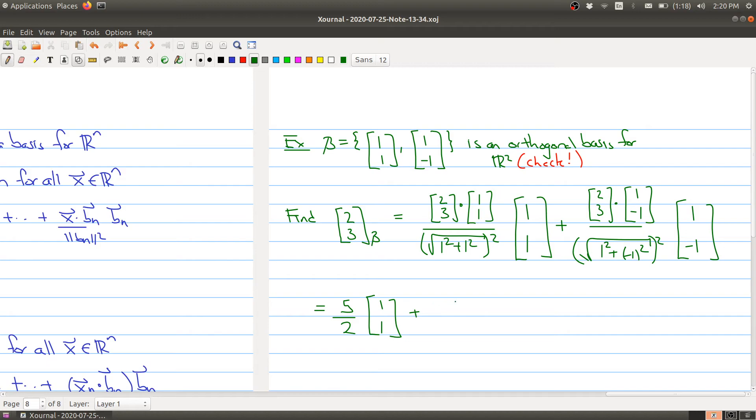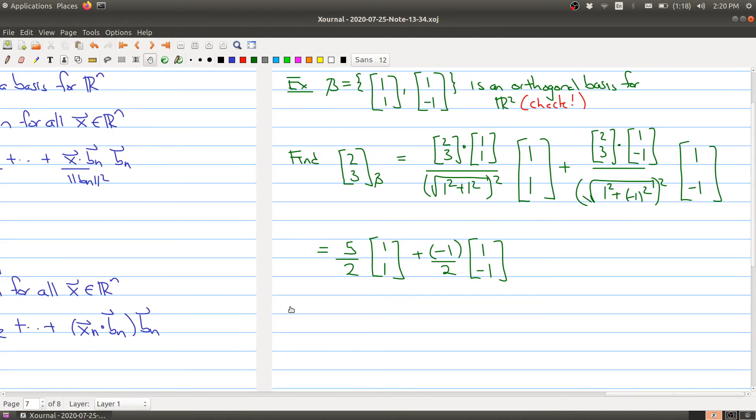And here I will have upstairs 2 minus 3, so I'll have -1 upstairs, and downstairs I'll have 2, times (1,-1). So this implies that the b-coordinate of (2,3) is 5/2, -1/2. Those are the coefficients that I'm finding right there.